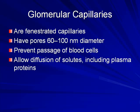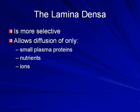These pores measure about 60 to 100 nanometers — very small openings in these blood vessels. They prevent the passage of blood cells, being too small for them, but they do allow passage of solutes such as sodium, potassium, calcium, and other electrolytes, including plasma proteins. Plasma proteins are bigger than the electrolytes themselves.